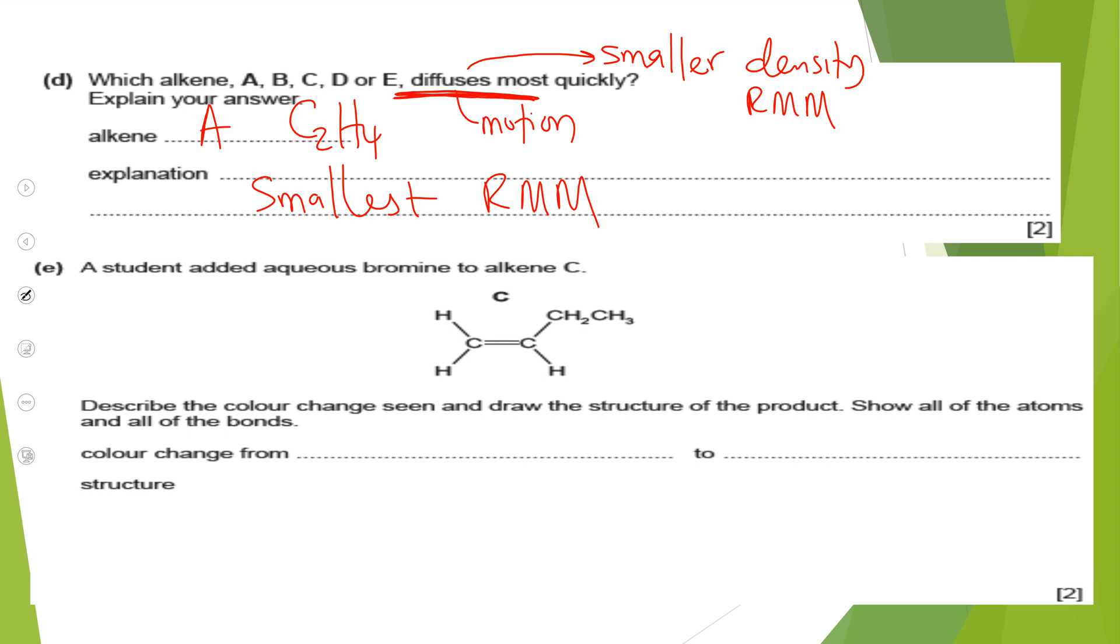The last question here. A student added aqueous bromine. Let's consider this. First, this aqueous bromine, it's actually HOBr. Aqueous bromine is HOBr. It can also be called bromine water. This substance is also known as bromine water, and that is HOBr.